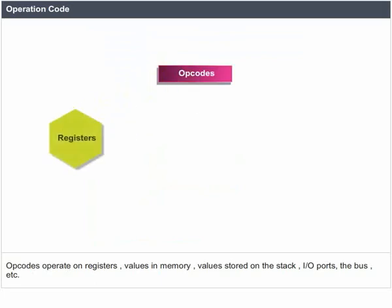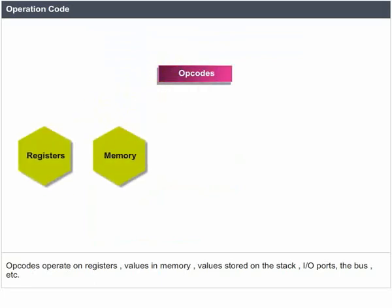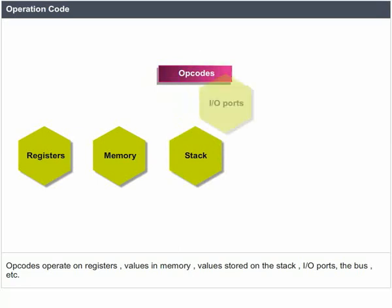A computer can perform operations, each of which is assigned a numeric code called an opcode. Opcodes operate on registers, values in memory, values stored on the stack, input-output ports, the bus, etc.